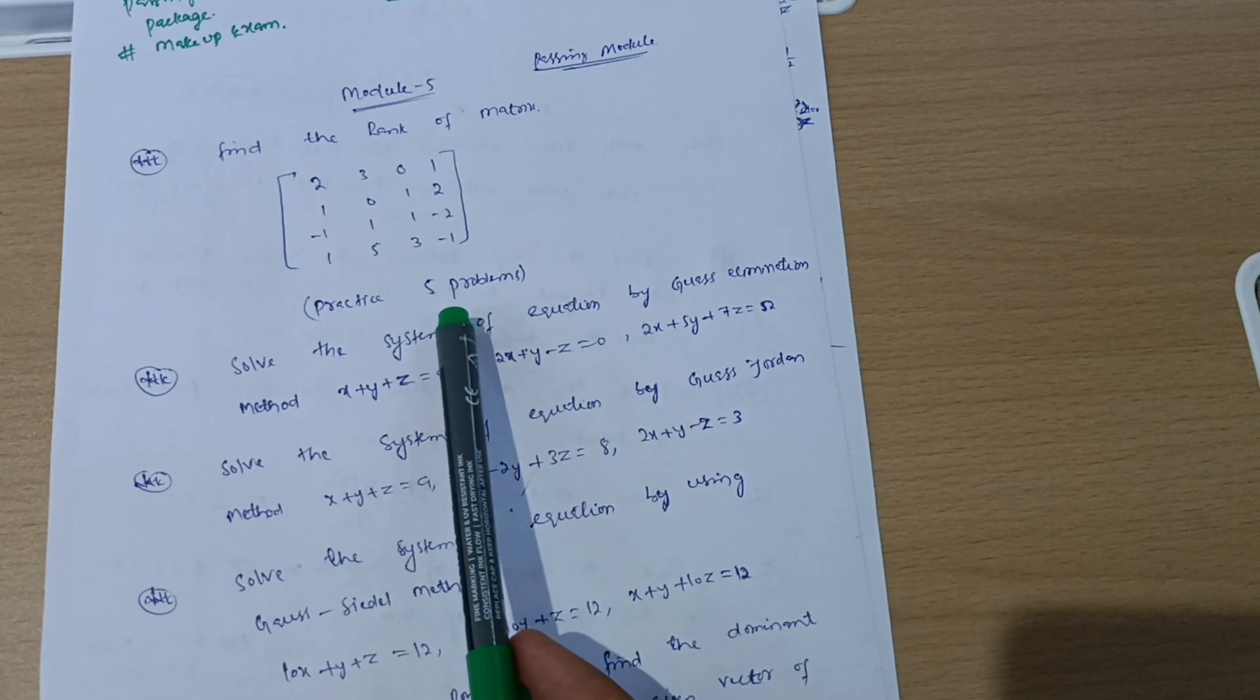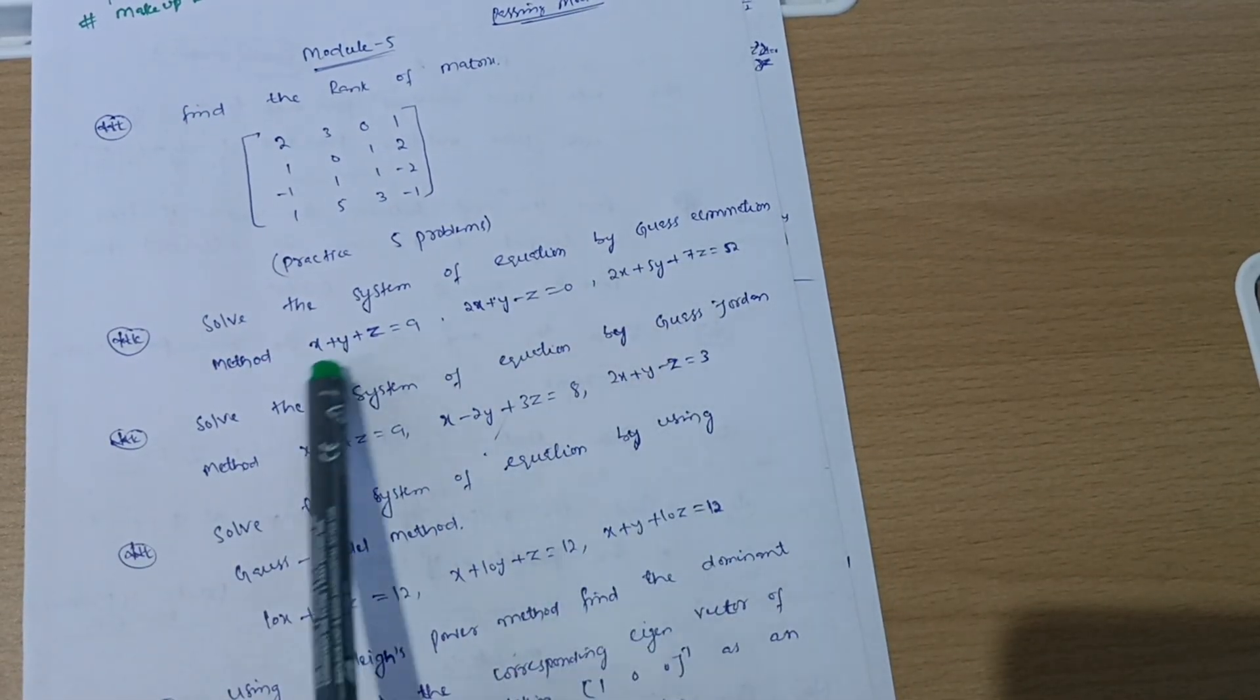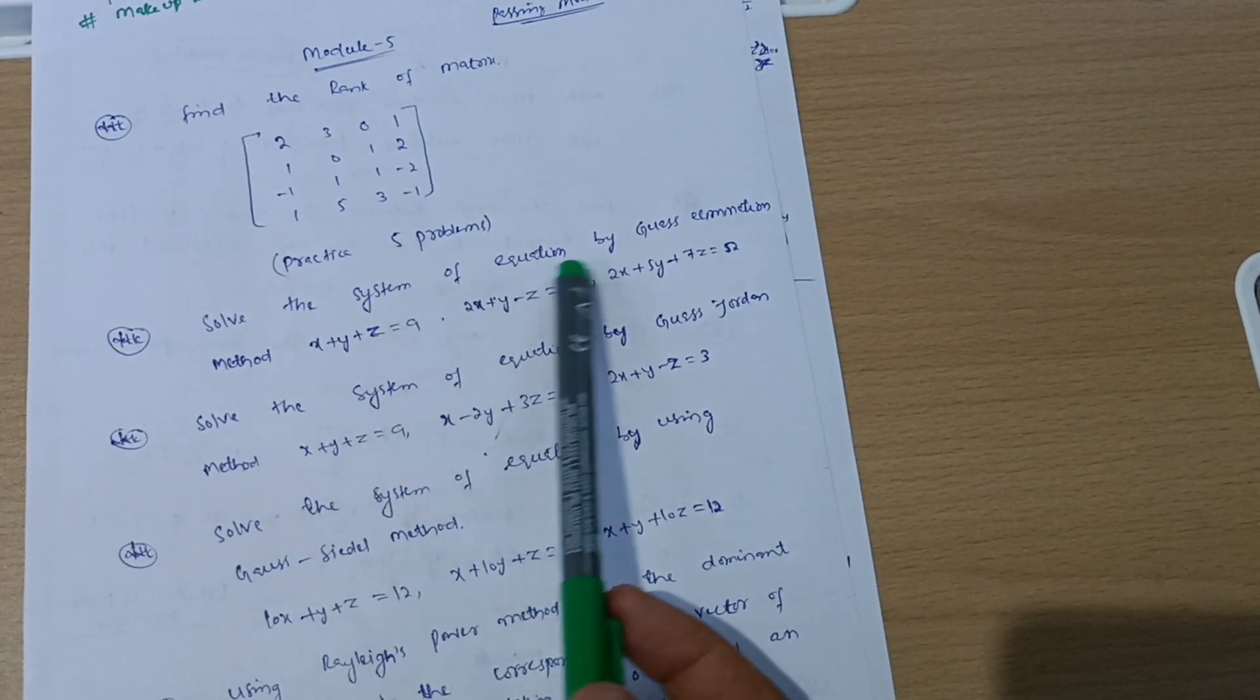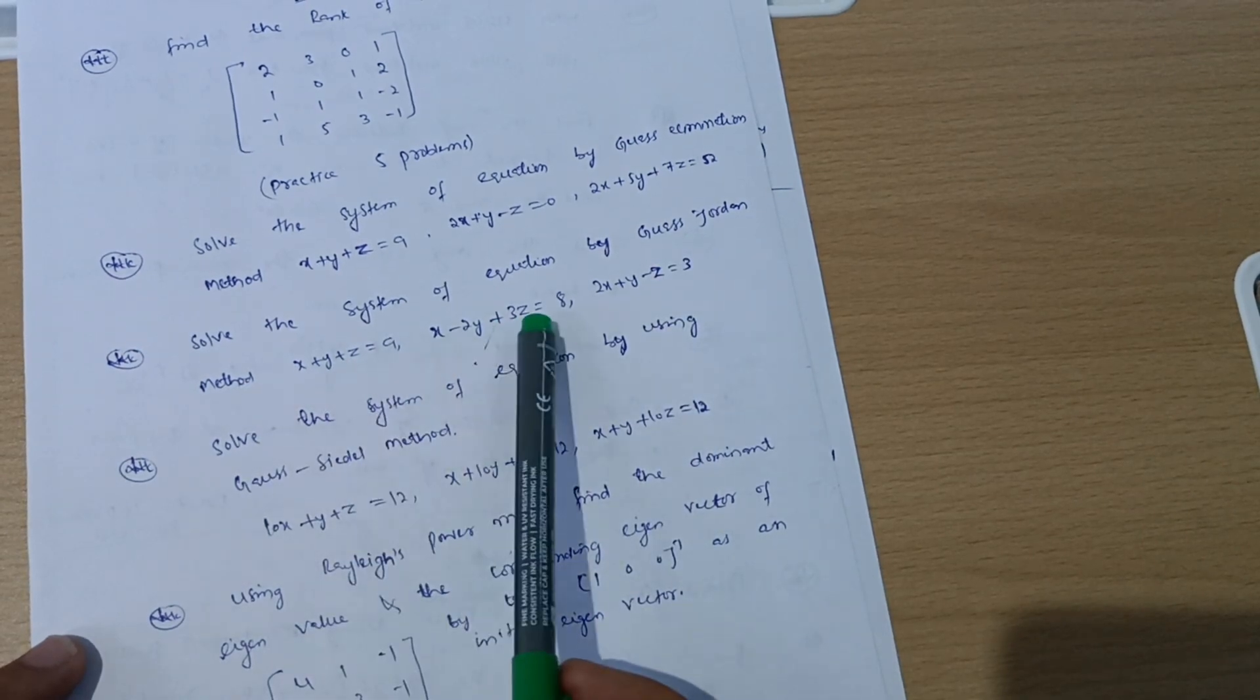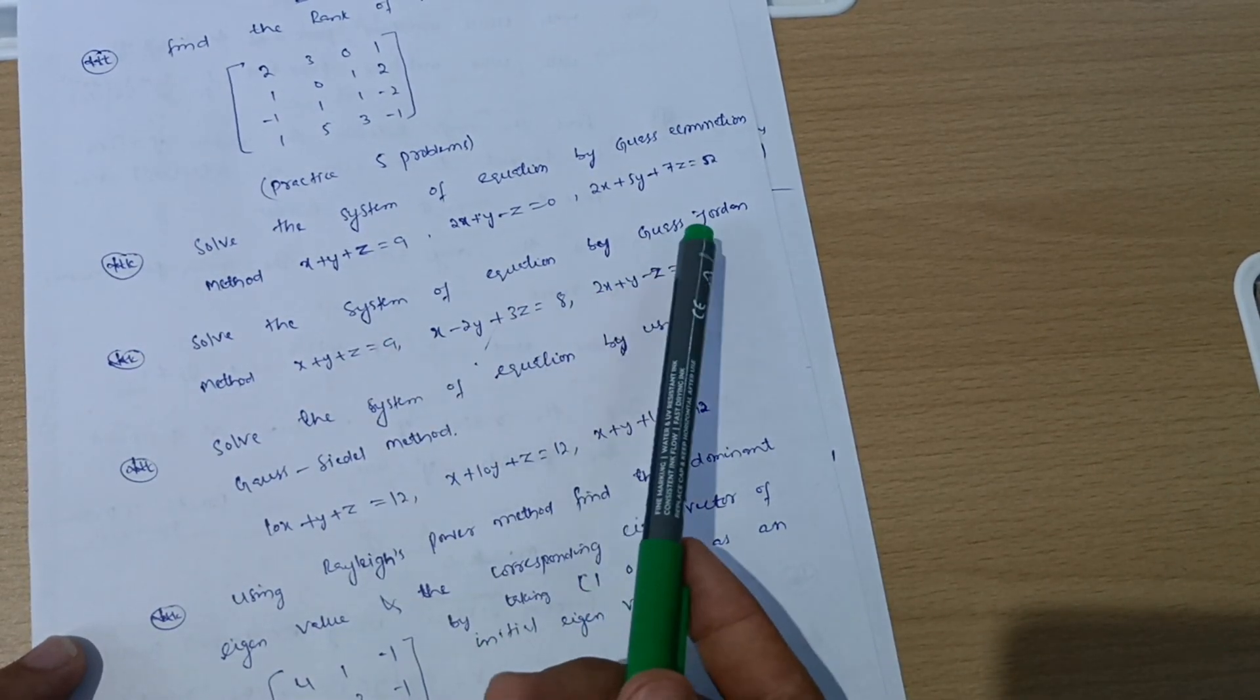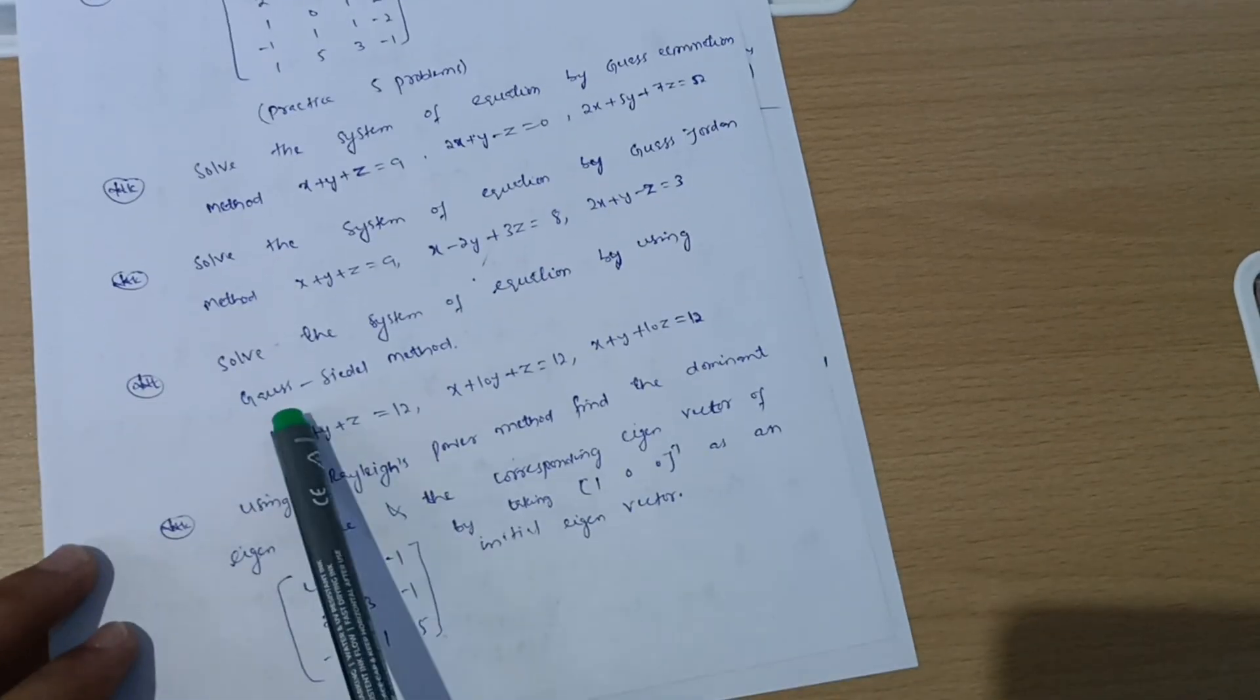Next, solve the system of equations by Gauss elimination method: x plus y plus z. These are the equations, system of equations you have to solve them using Gauss elimination method. Another method is Gauss-Jordan method, so system of equations will be given and you have to solve them by using Gauss-Jordan method. Practice three problems from Gauss elimination, Gauss-Jordan, and also Gauss-Seidel method.